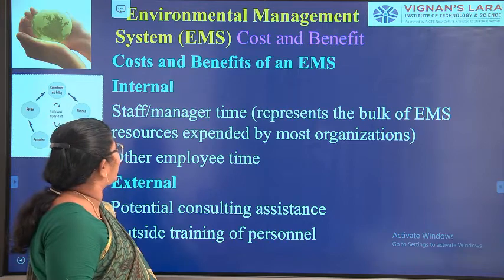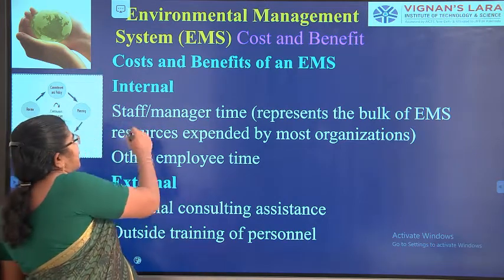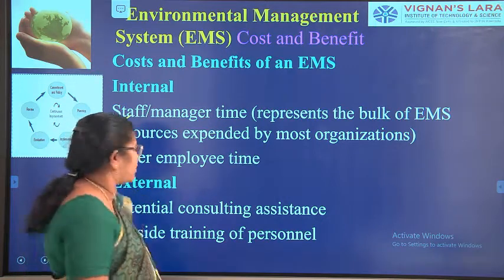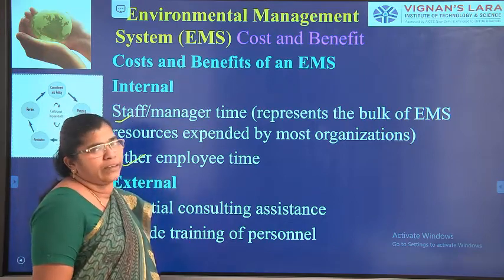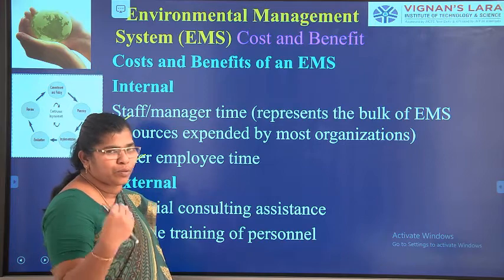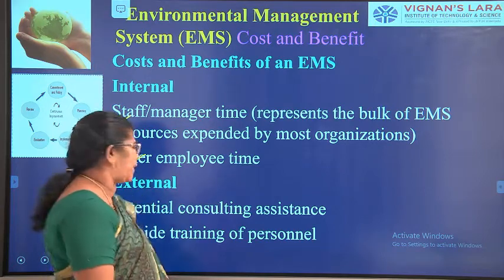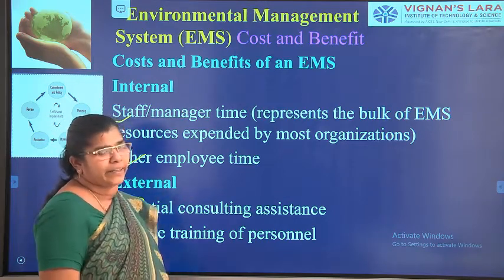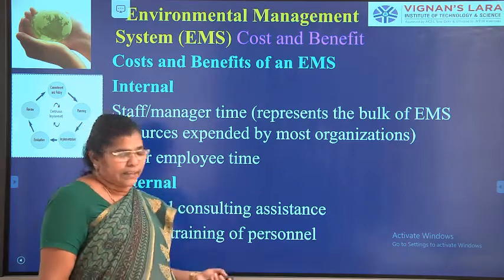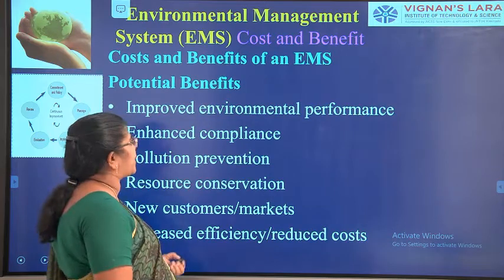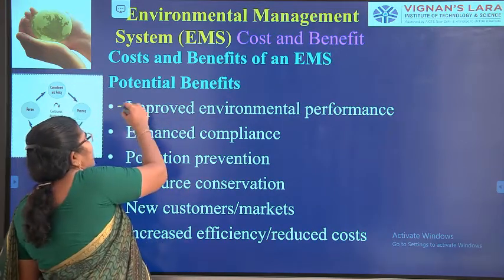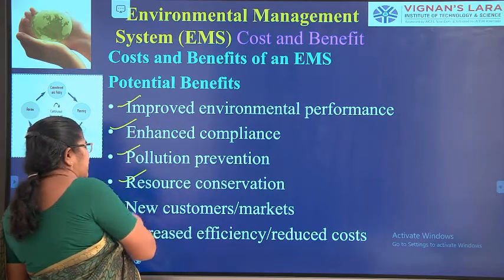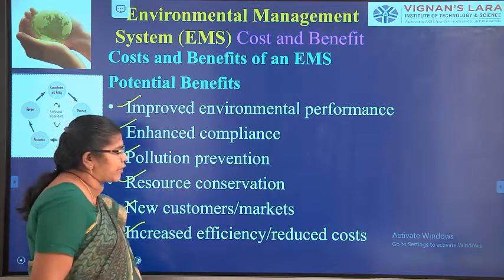Now we look at the cost and benefit of EMS. Internal costs include staff management time and other employees' time — time is a resource directly or indirectly related to cost. External costs include potential consulting assistance and outside training of personnel. The potential benefits are improved environmental performance, enhanced compliance, pollution prevention, resource conservation, new customer markets, and increased efficiency or reduced cost.